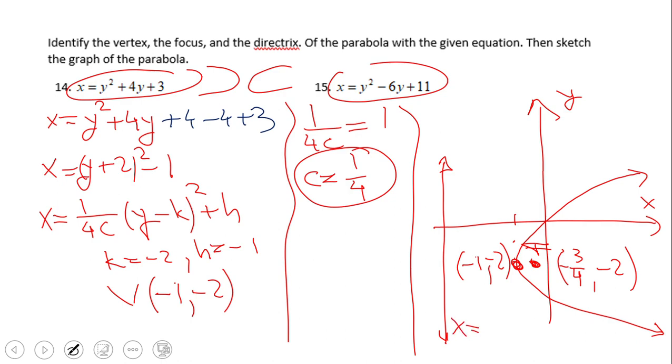So we go again from this vertex, which has x coordinate of negative 1, we go 1 fourth left, so that's going to be negative 5 fourths. Go ahead and pause this video clip and try number 15.